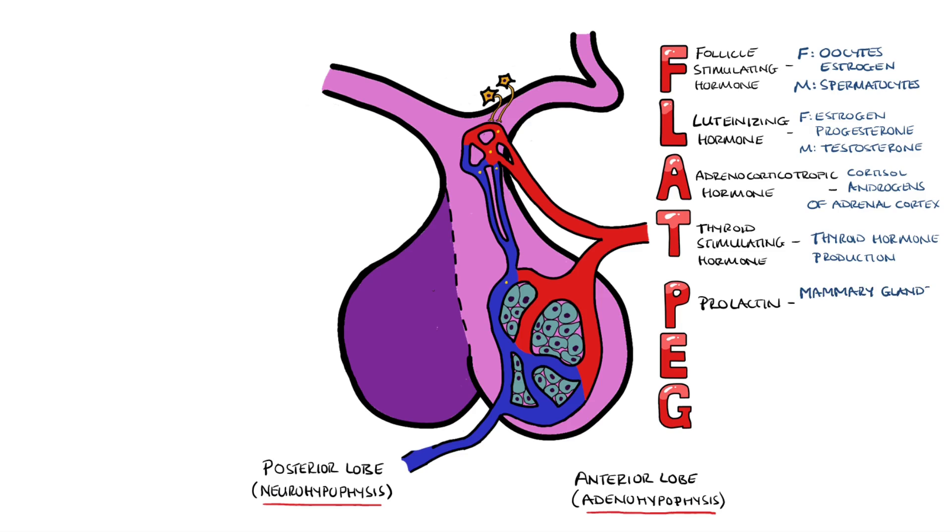P is for prolactin, which is involved in the development of the mammary glands and milk production.